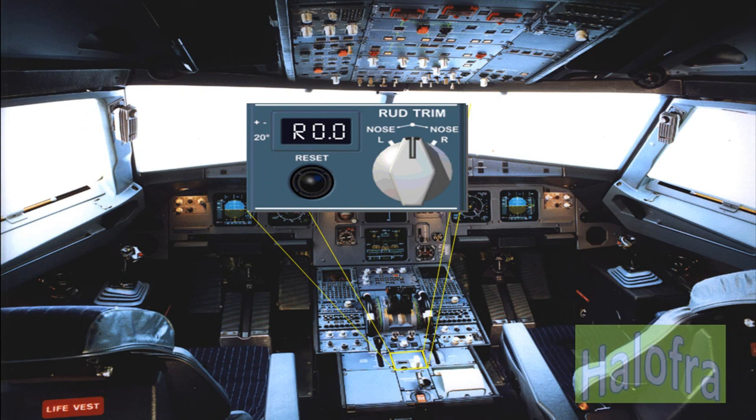A rudder trim panel is located on the pedestal. Manual trim orders are received from a switch located on the center pedestal. An automatic reset function is initiated through a push button switch and allows the trim position to be nulled. The position indicator displays the rudder trim direction — left or right — and value. The rudder trim rotary switch is not active when the autopilot is engaged, as the rudder trim is controlled by the autopilot system.